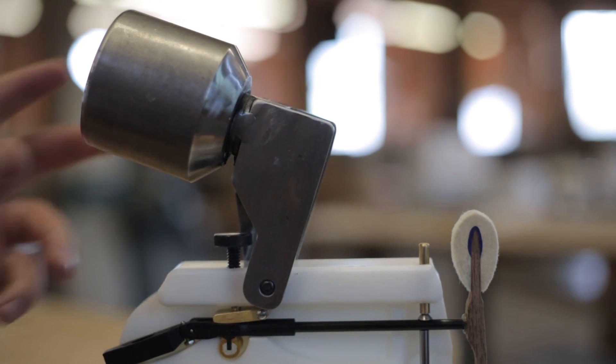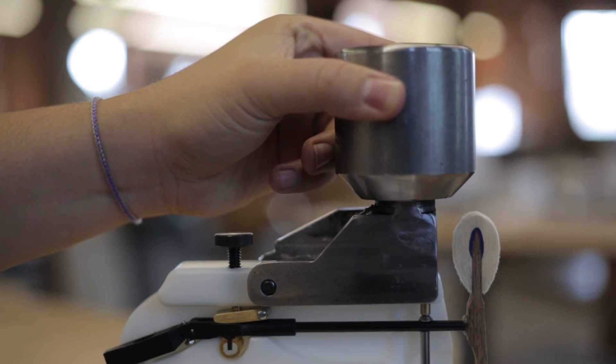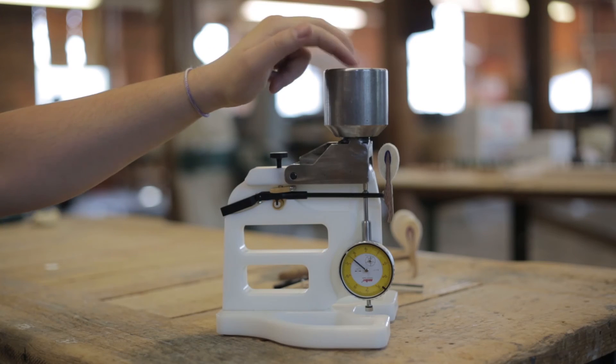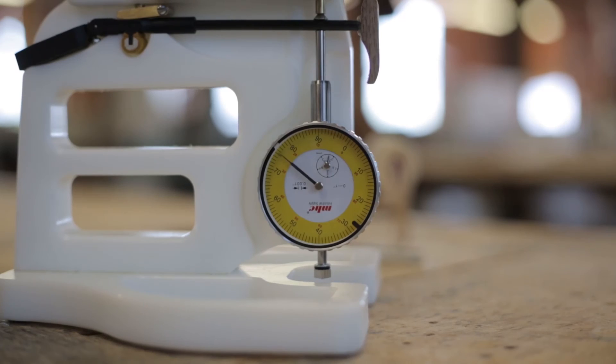Move the weight down so that it gently makes contact with the top of the floating pin. Lightly tap the weight a few times until the dial goes back to the same position every time. This will give you a more accurate reading.